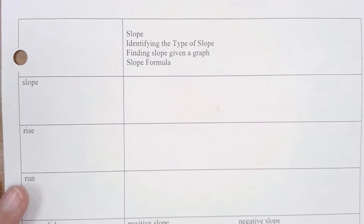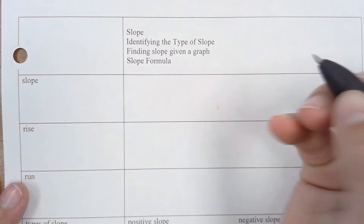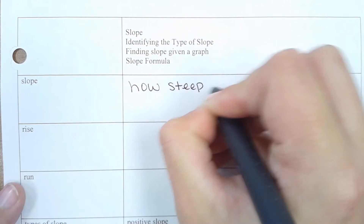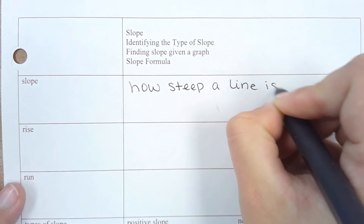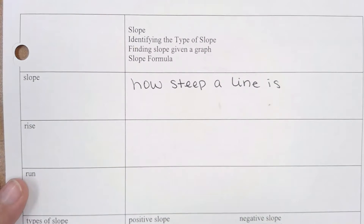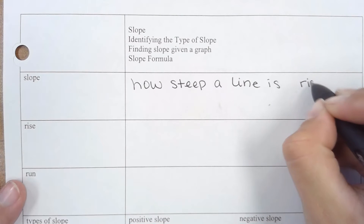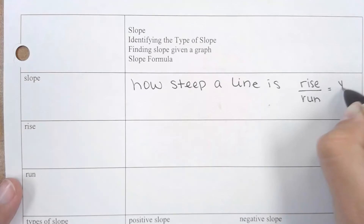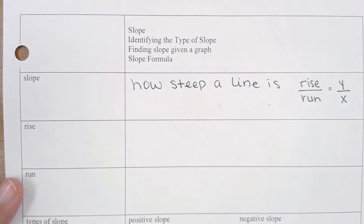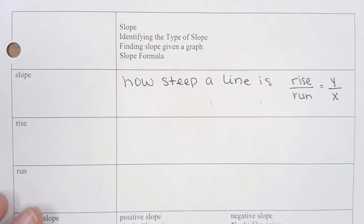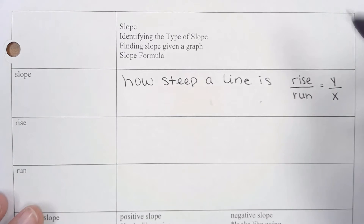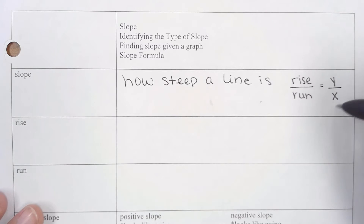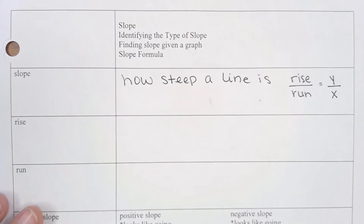Let's remember what slope is. The definition of slope is how steep a line is. We always represent slope as the rise over the run — in other words, the change in Y over the change in X. To find slope from a graph, we're going to be using rise over run, and to find slope from a table, we are going to be using the change in Y's over the change in X's.